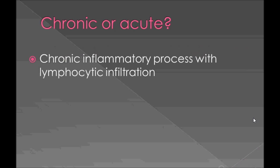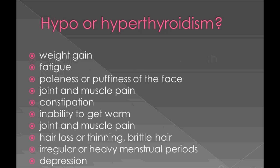First question: is it acute or chronic? It's a chronic inflammatory process with lymphocytic infiltration. Initially you can see hyperthyroidism because of rupture of cells and release of hormones within the cells, and after that they will have the features of hypothyroidism. This is very important.